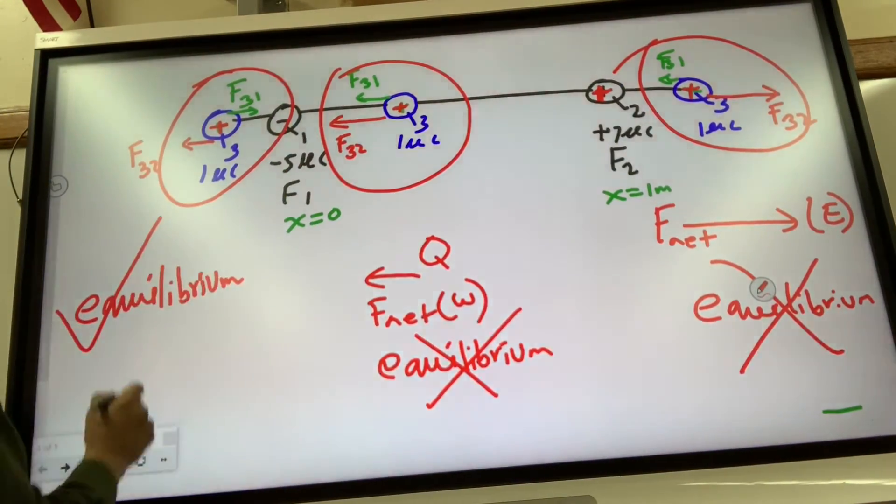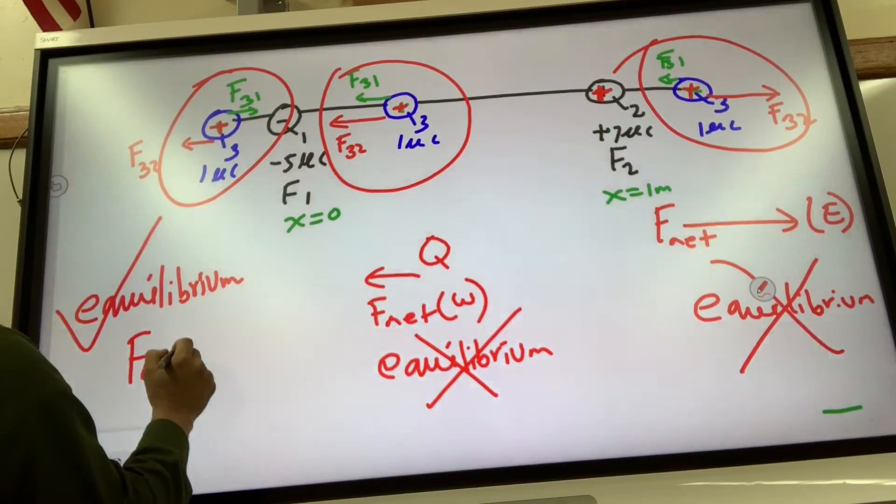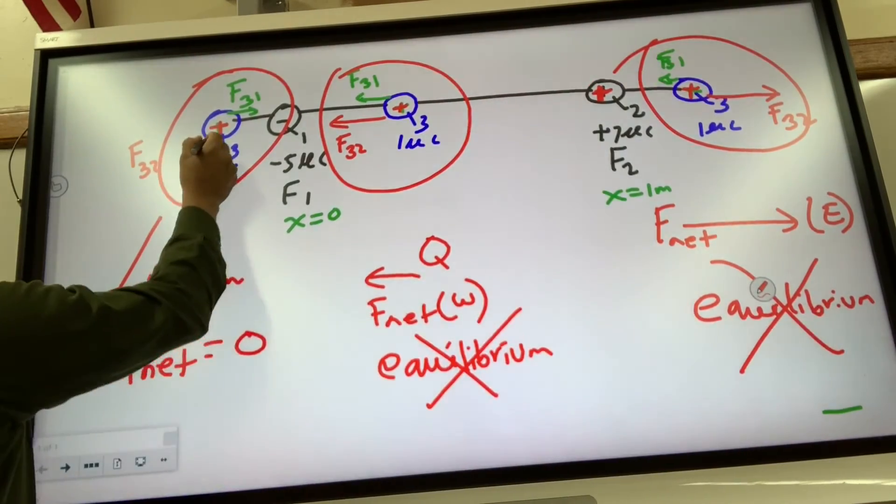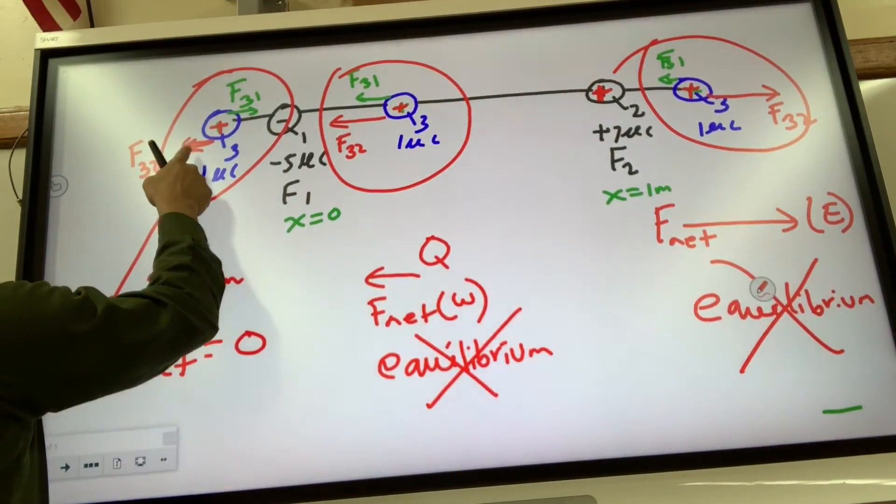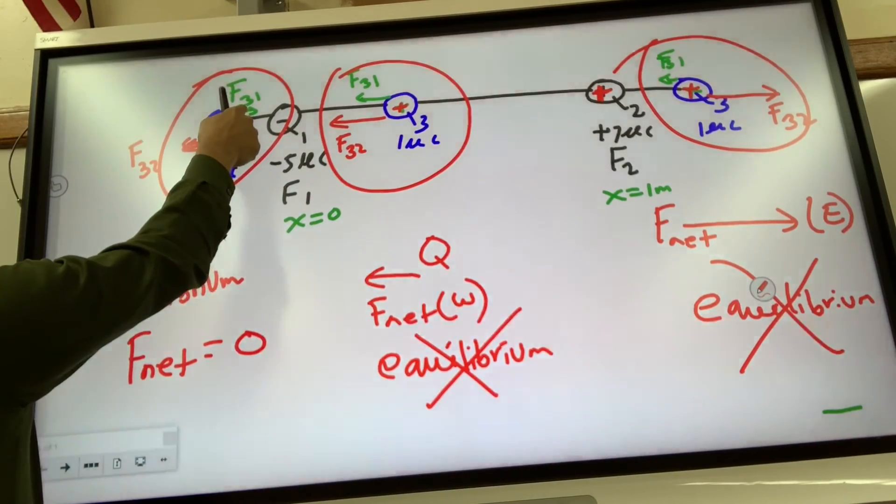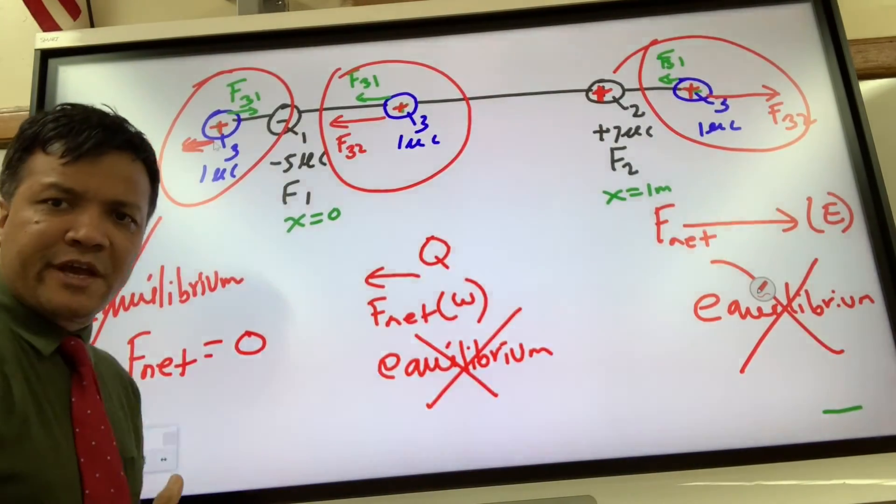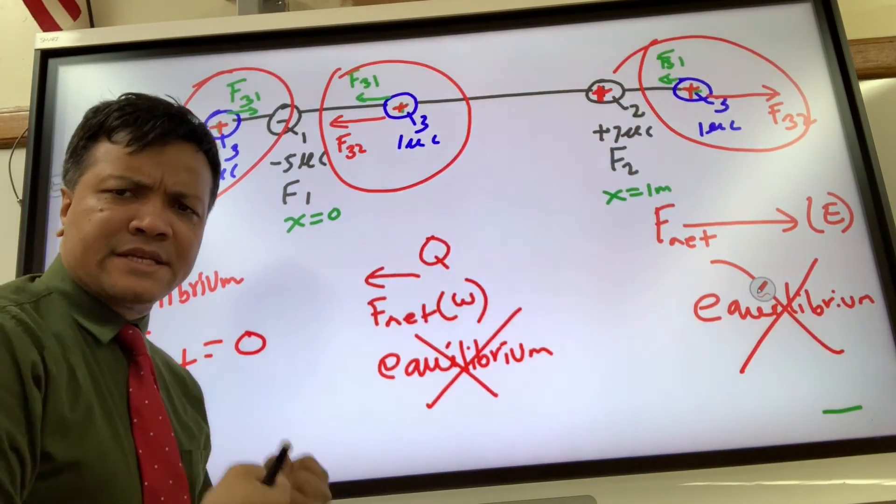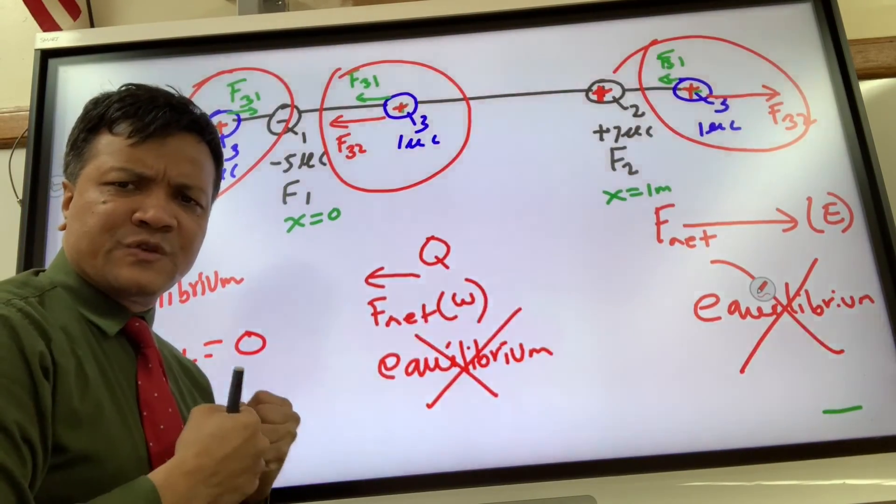This one will experience equilibrium because the net force is zero. Because the red is equal in magnitude with the green, but opposite in direction, making the net electrostatic force zero.